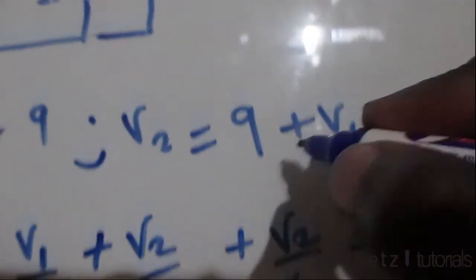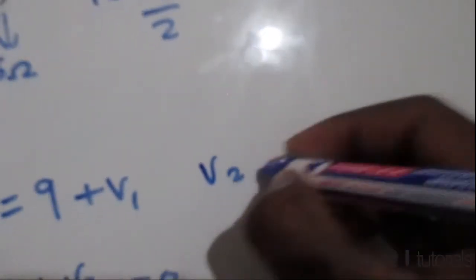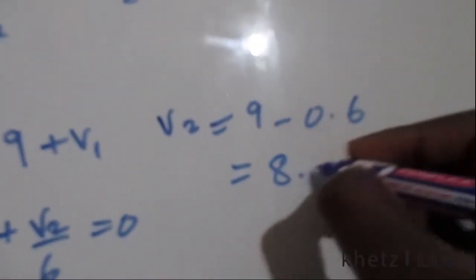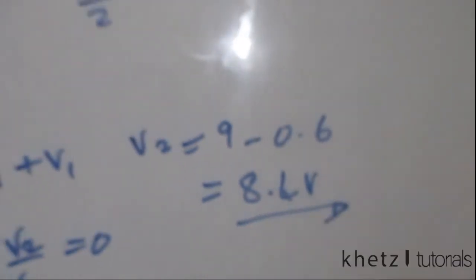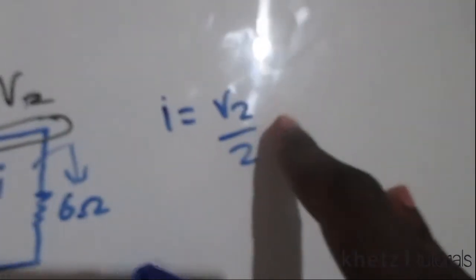V2 equals 9 plus v1. We found v1 to be negative 0.6, so v2 equals 9 minus 0.6, and your answer is 8.4 volts. That's v2, and this v2 is going to help us find i because i equals v2 over 2.